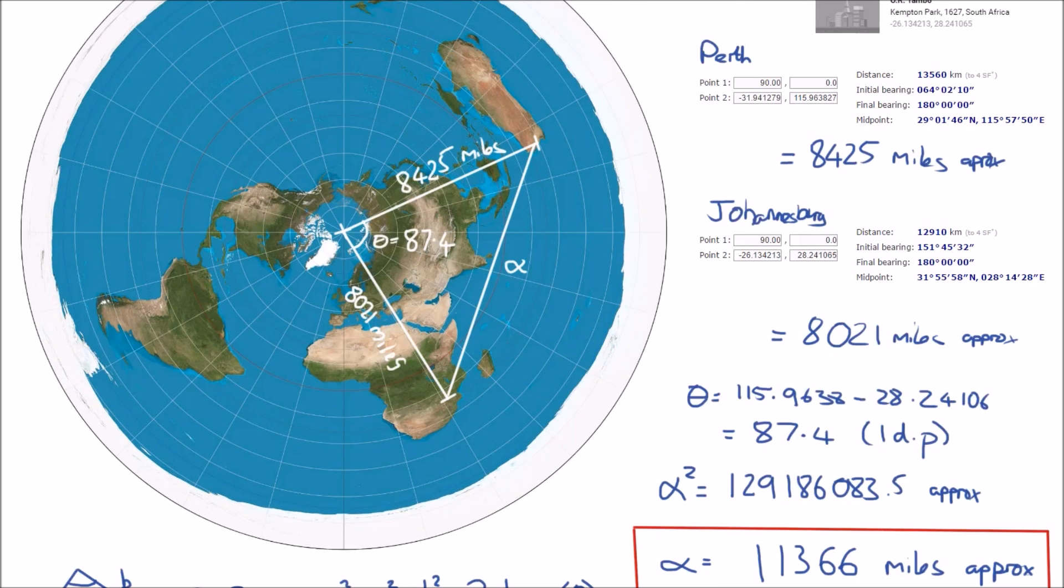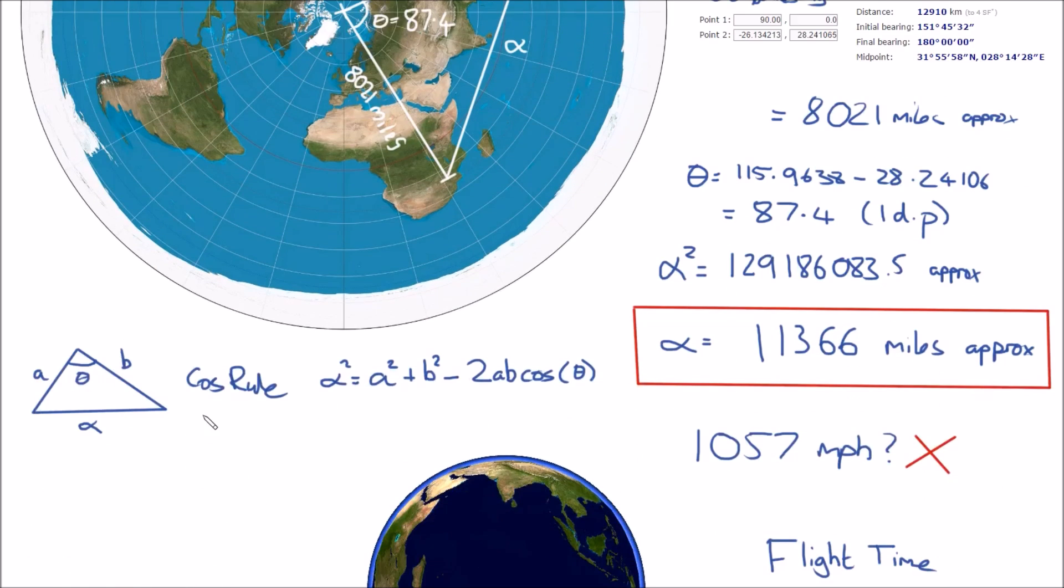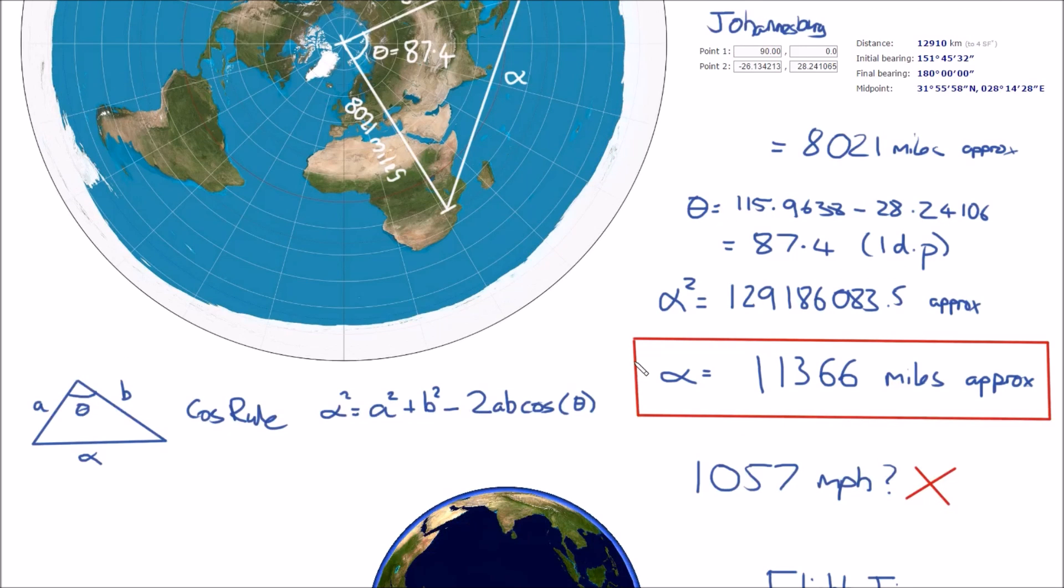So I'm interested in this length here, which I've labeled alpha. If we recall, the cosine rule will allow us to work out this result. So I've stated the cosine rule here and I've substituted in the values and I've worked through—I've used my calculator to get alpha squared.